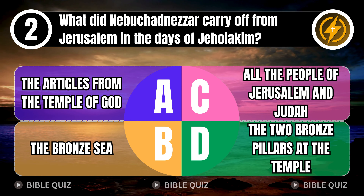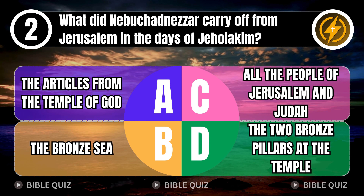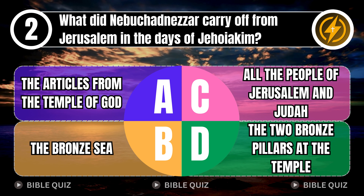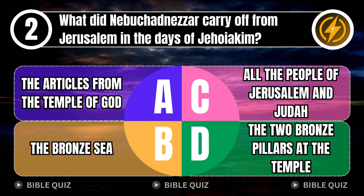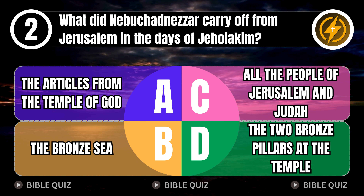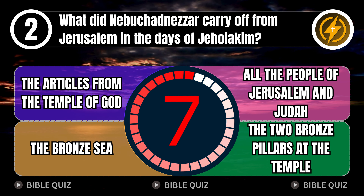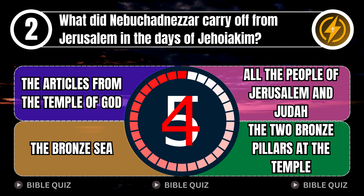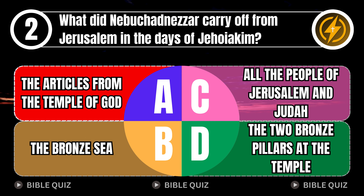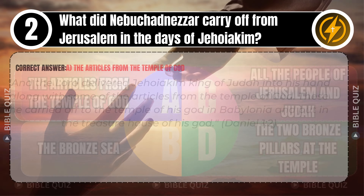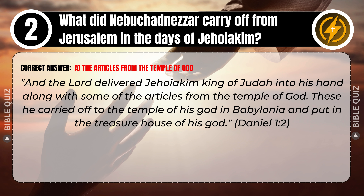Question 2: What did Nebuchadnezzar carry off from Jerusalem in the days of Jehoiakim? A. The articles from the temple of God. B. The bronze sea. C. All the people of Jerusalem and Judah. D. The two bronze pillars at the temple. Correct answer: A. The articles from the temple of God. Explaining the Bible — the Lord delivered Jehoiakim king of Judah into his hand, along with some of the articles from the temple of God. These he carried off to the temple of his God in Babylonia. Daniel 1 verse 2.